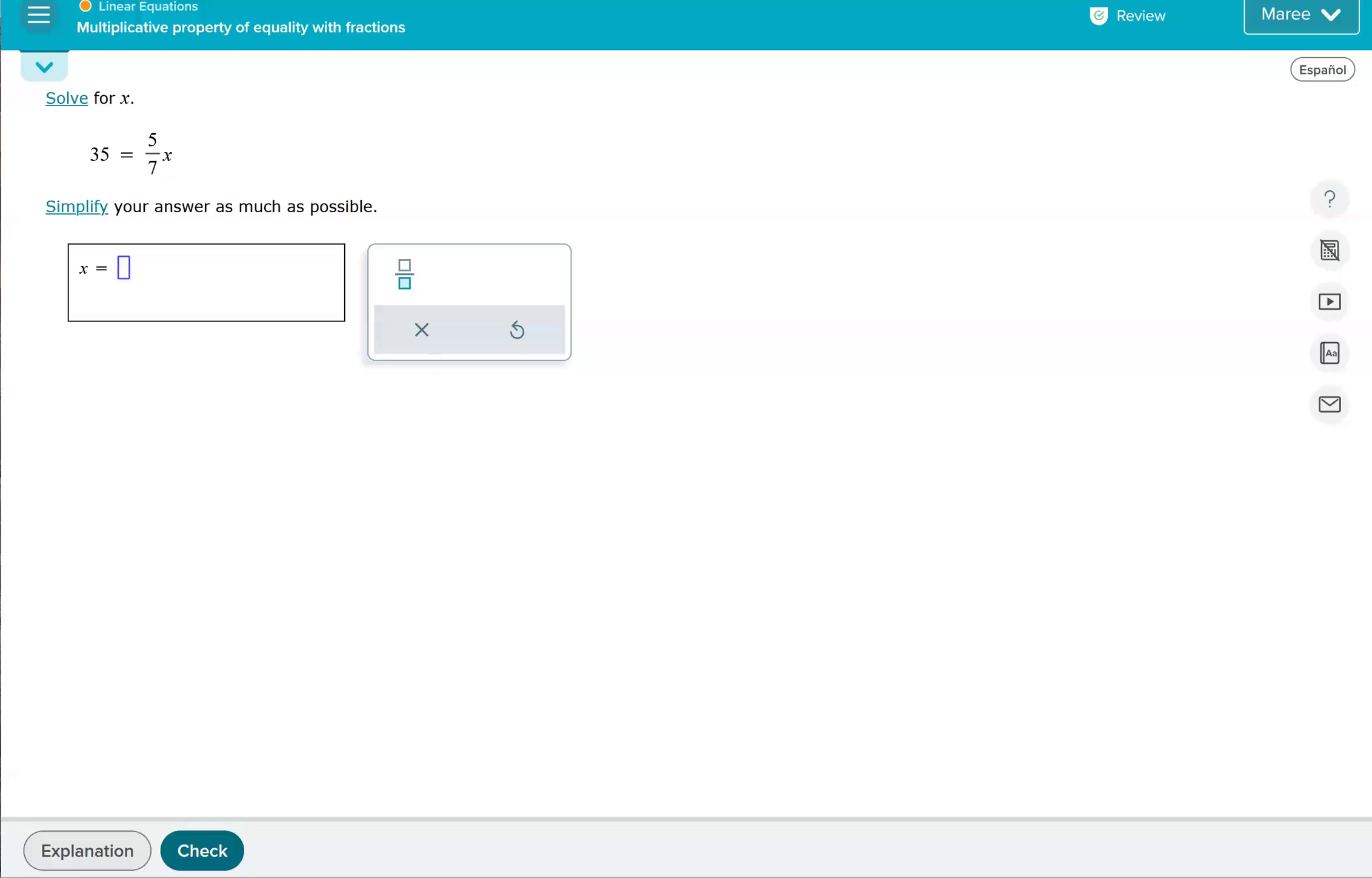So again, in this problem, the x has a fraction on it. Sometimes seeing that variable over there on the right side can get a little disconcerting, especially when you're first learning about solving for variables. It's okay. Because these two are equal, you are welcome to switch sides. So if you want, we could put 5/7 x on the left and 35 on the right. If that looks better to you, then just do it. It's totally legal in the math world.